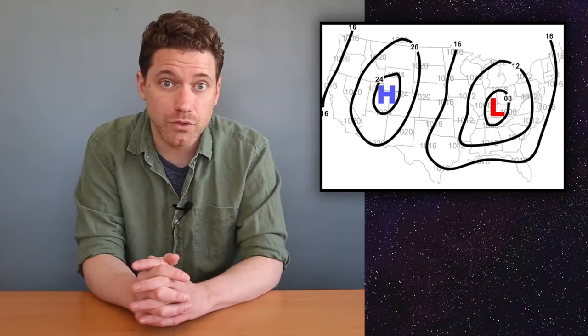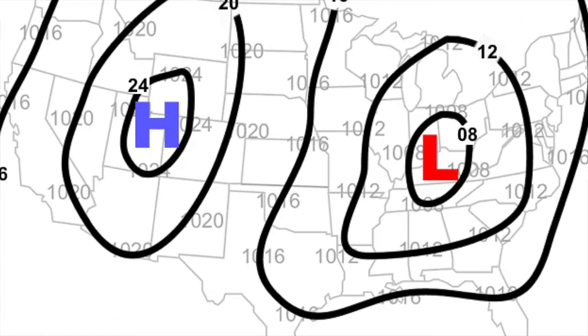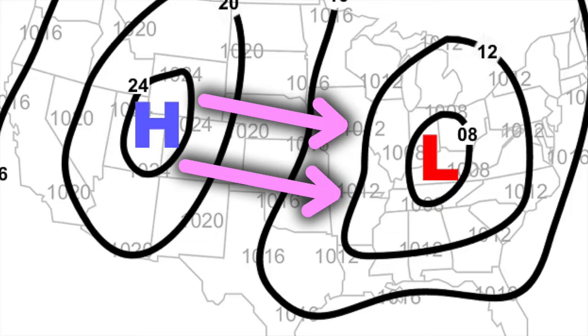If we look at the contour map of pressure from the pressure gradient video, we would expect wind to blow directly from the high pressure region down to the low pressure region.